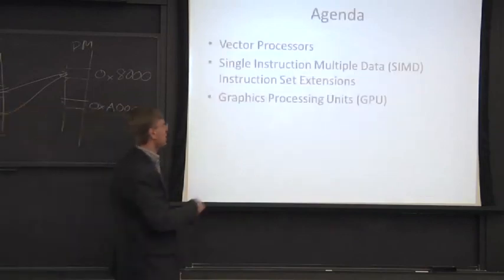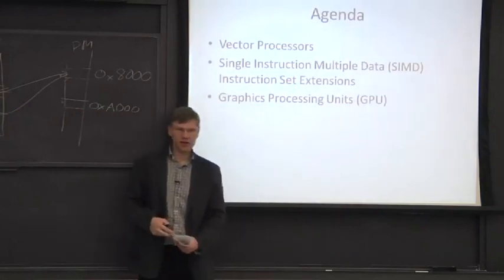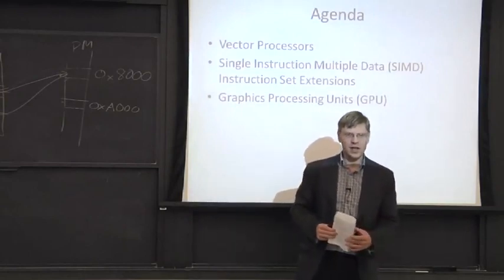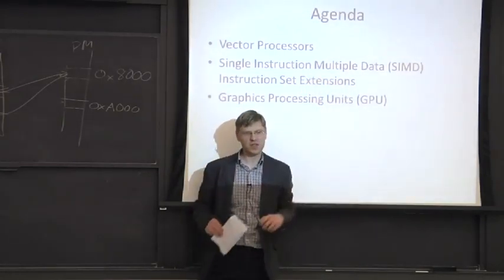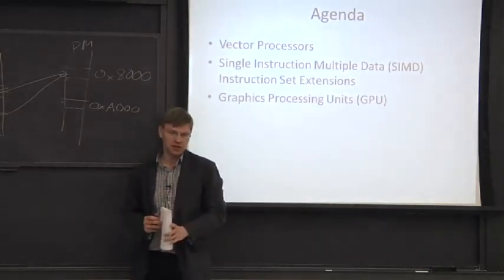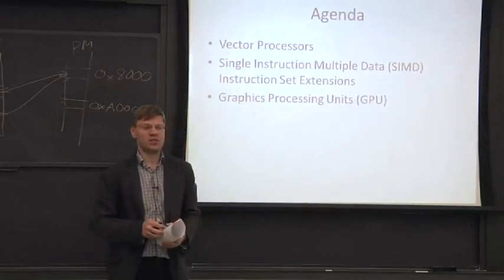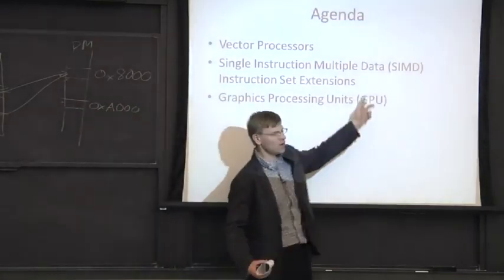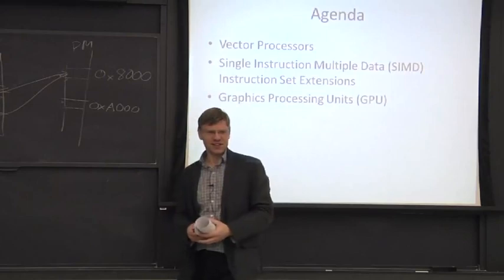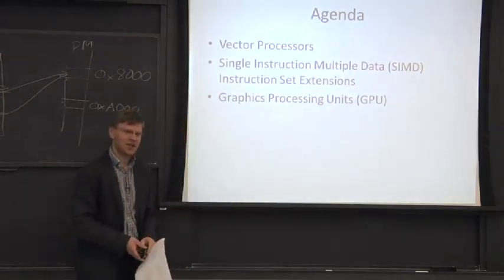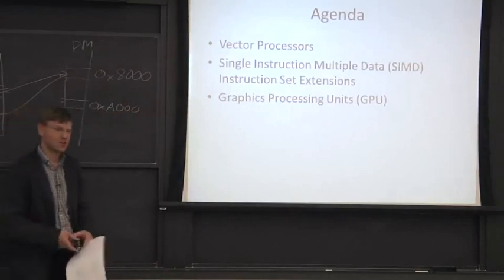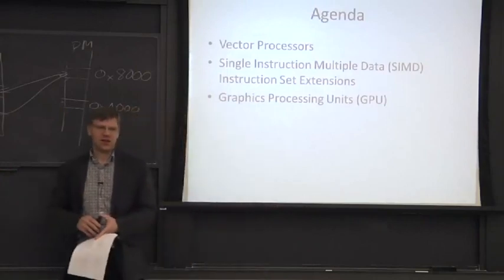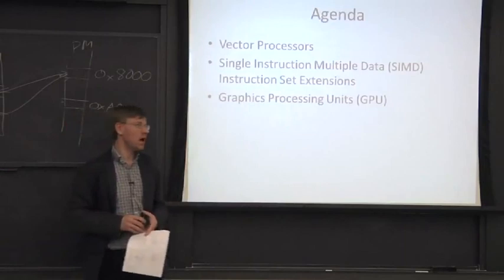Also in today's lecture, we're going to talk about single instruction multiple data architectures — a degenerate case of vector architectures. Good examples include multimedia extensions (MMX) in Intel processors, AltiVec in the PowerPC architecture, Intel's SSE (streaming SIMD extensions), and AVX, which is even wider. They have continually added more instructions to make the short vector capability better.